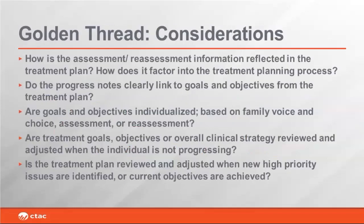We have a few considerations — questions you can ask yourself when going through the documentation and treatment planning process to ensure alignment with the golden thread principle. For instance, is the assessment or reassessment reflected in the treatment plan? Assessments are ongoing, not just an initial one. Essentially, when writing a progress note, you want the activities captured to tie back to a goal or objective agreed upon with the child and family, which then ties back to medical necessity or an assessment conducted by that provider — a clear link from beginning to end.